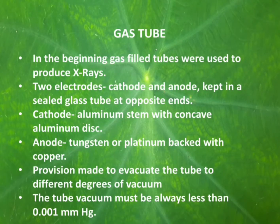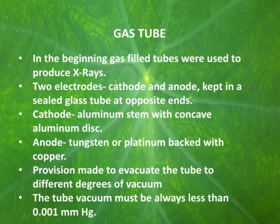In the beginning, as I said, we were using gas-filled tubes. Presently we are using x-ray tubes with vacuum conditions, but in the earlier days we were using gas-filled x-ray tubes to produce x-rays. These tubes have two electrodes similar to the modern x-ray tube — a cathode and an anode — kept in a sealed glass tube at opposite ends.